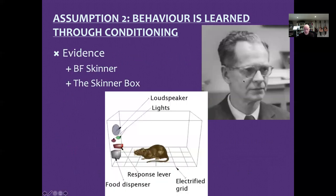This theory was developed by B.F. Skinner, who was an amazing psychologist and also a good writer — he wrote a novel based on a behaviorist world called 'Walden Two,' which I'd really recommend. He also liked inventing things and he invented a box to test out his theory of operant conditioning.